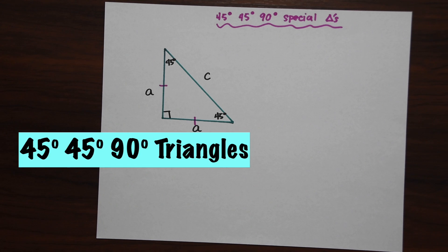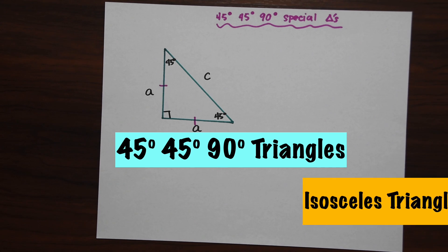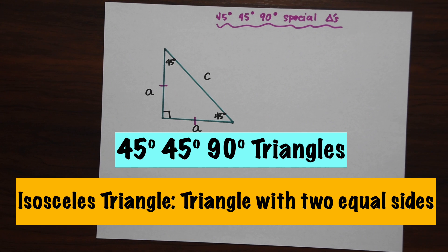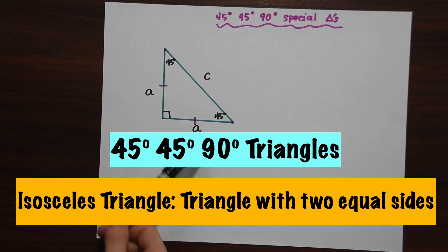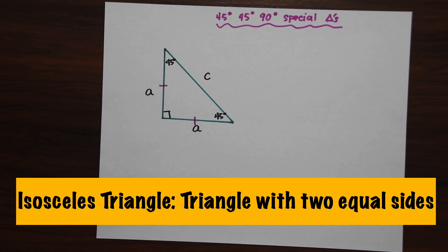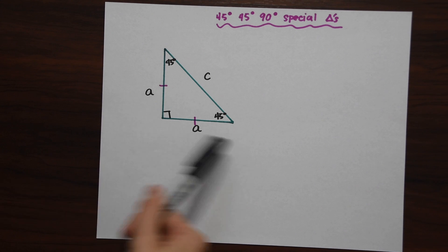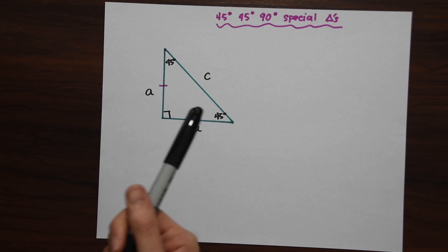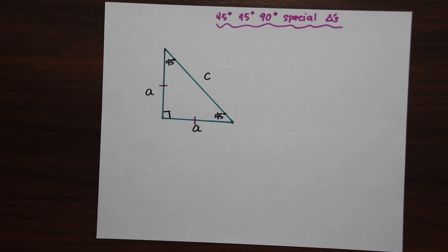The 45-45-90 degree triangle is special because it is an isosceles triangle, meaning that it has two equal sides marked in pink. So if we know the two sides are equal, then we can find the value of the third side, which is the hypotenuse, by using the Pythagorean theorem.